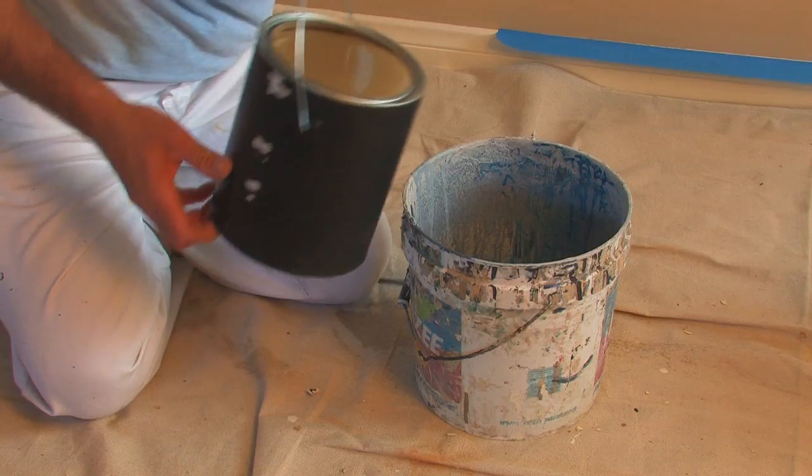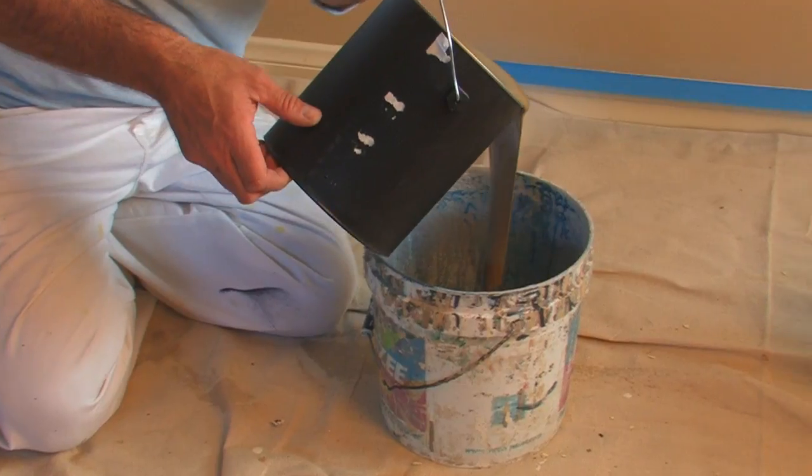A couple of things to think of when you're painting a dark color: one, the color itself. You don't want to go too dark for the room because it will close it down and seal it off. And the other thing is you want to have a color that's going to be harmonious with other colors that are in the room.